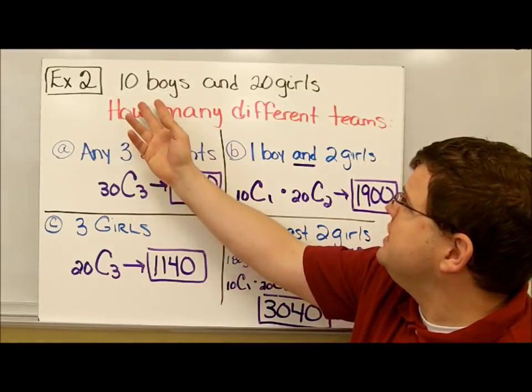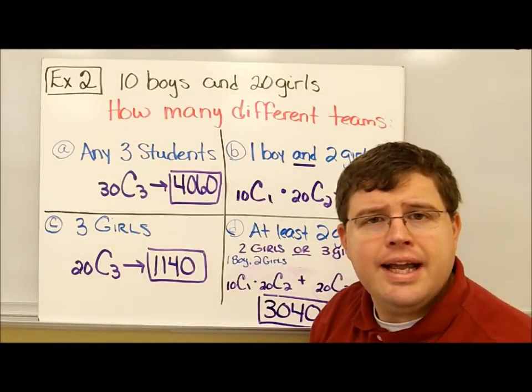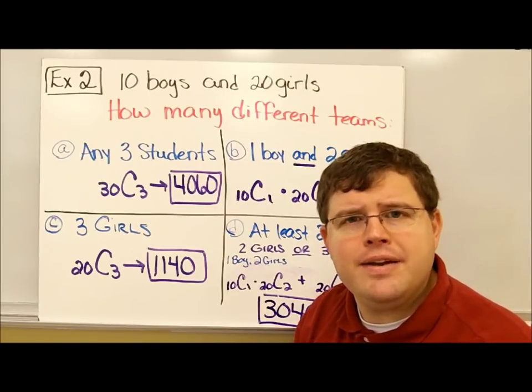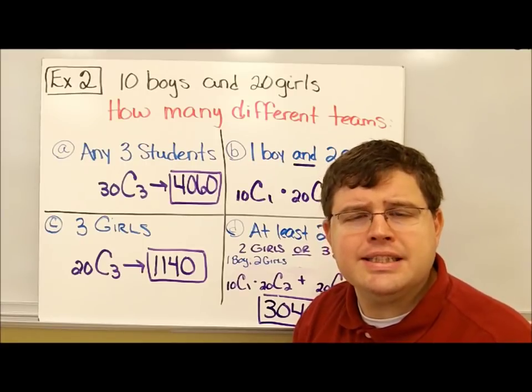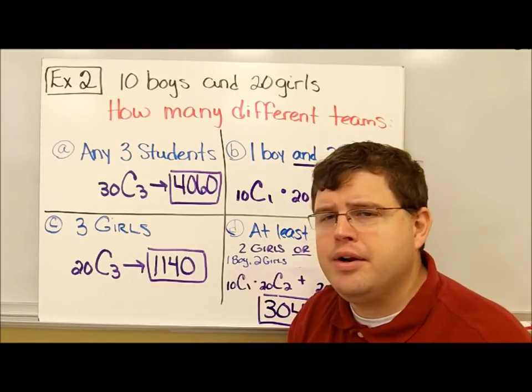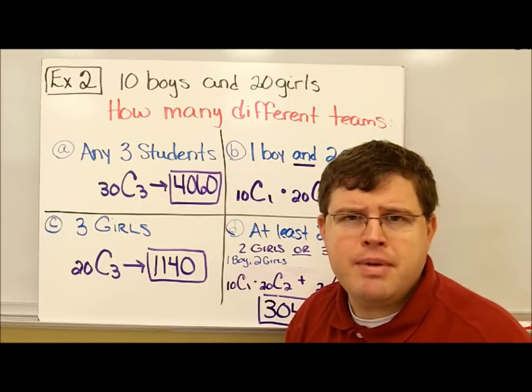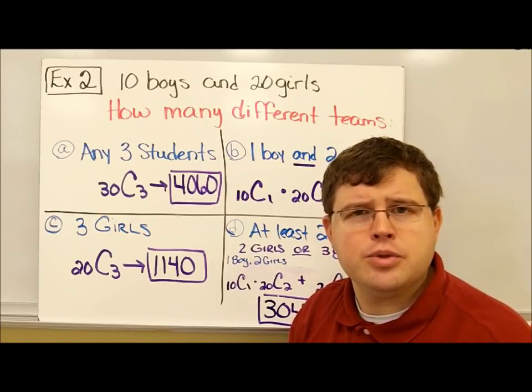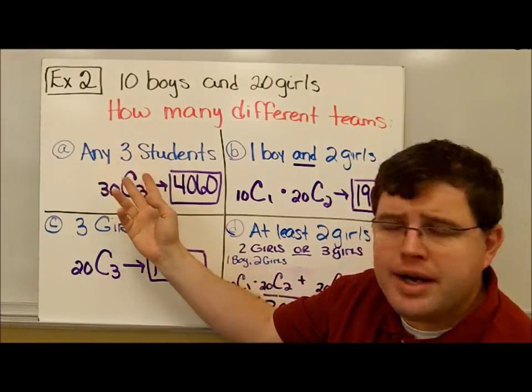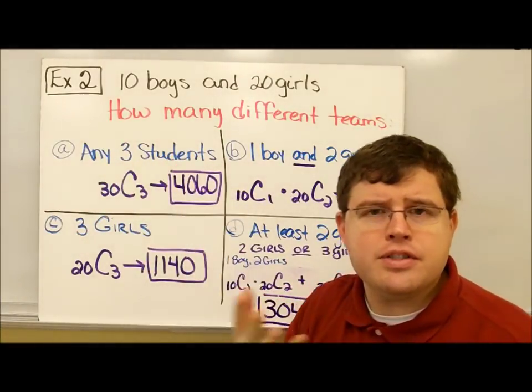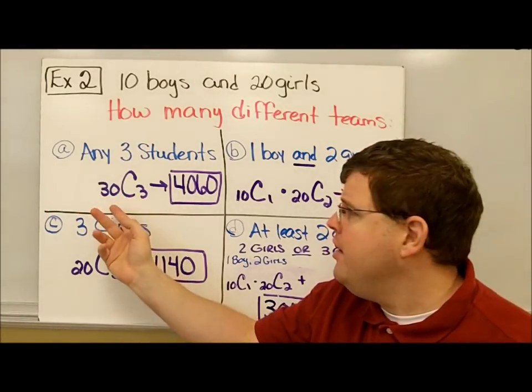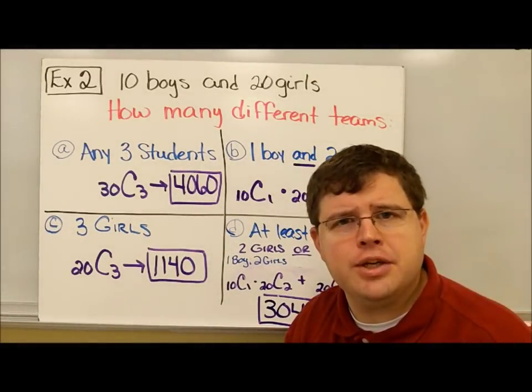Here's an example for us to work with. Mrs. Fitzsimmons has a class with 10 boys and 20 girls, and she wants to choose a team of 3 to perform a community service task. We want to know how many different groupings she could choose. Does the order I choose these people matter? If I choose Peter, Paul, and Mary, that's the same group if I choose Mary, Peter, and Paul. So it doesn't make a difference which order I choose them. That must be a combination. If she wants any 3 students, there's 30 all together, she's going to pick 3 of them. 30C3, because the order doesn't matter, equals 4,060 different groups.